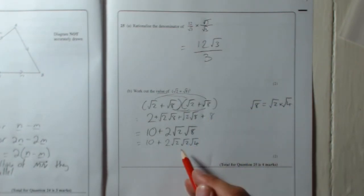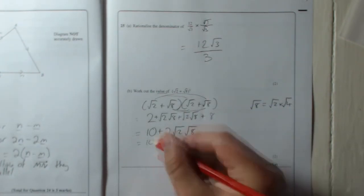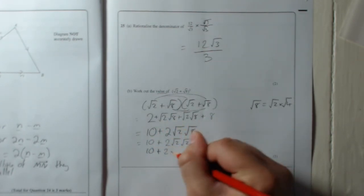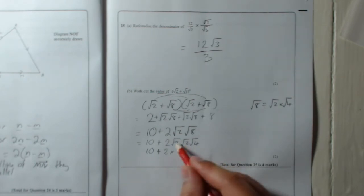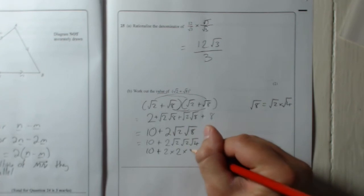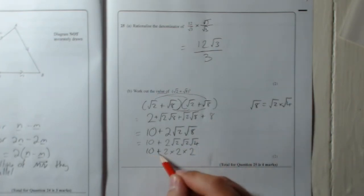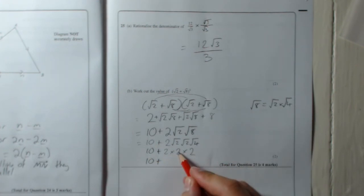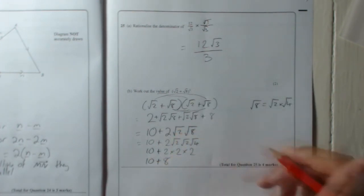So now if you look at it again, you've got 10 plus 2 times root 2 times root 2 is just 2, times root 4, which is 2 again. So it's 10 plus 2 times 2 times 2, which is 10 plus - 2 times 2 is 4, times 2 is 8. So 10 plus 8, so the answer is 18.